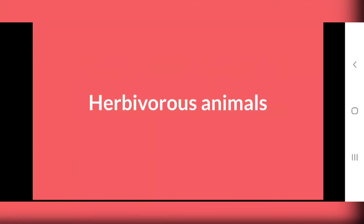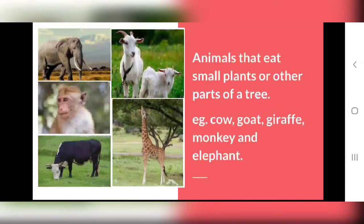The first group of animals is Herbivorous Animals. This word can be divided into two parts: 'herbi' and 'vorous'. Herbi means plants and vorous means eating. So, animals which eat plants are Herbivorous Animals.